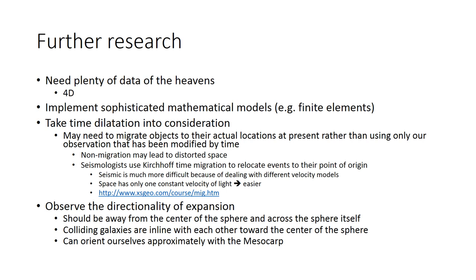Maybe we need to migrate, and I don't want to discuss migration here because it is something used in seismic and it is more complicated in seismic due to different velocities. But in our case we don't have variant velocities, we have only the speed of light which is almost constant. And also we can observe the directionality of expansion and this should be away from the center of the sphere and across the sphere itself. Colliding galaxies are in line with each other toward the center of the sphere. We can orient ourselves approximately with the mesocarp from the data.